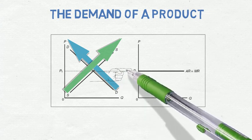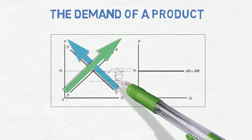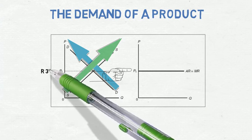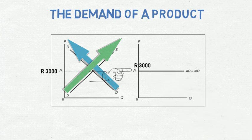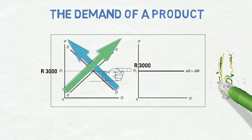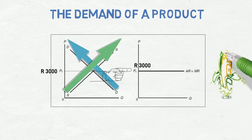For example, if the market price for a ton of maize is determined in the market by supply and demand at a price of R3,000 per ton, every maize farmer will sell maize for R3,000 per ton. If a farmer sells his maize for R4,000 — R1,000 higher than the market price — no one will buy his maize since the client can get the maize for R3,000 everywhere else.